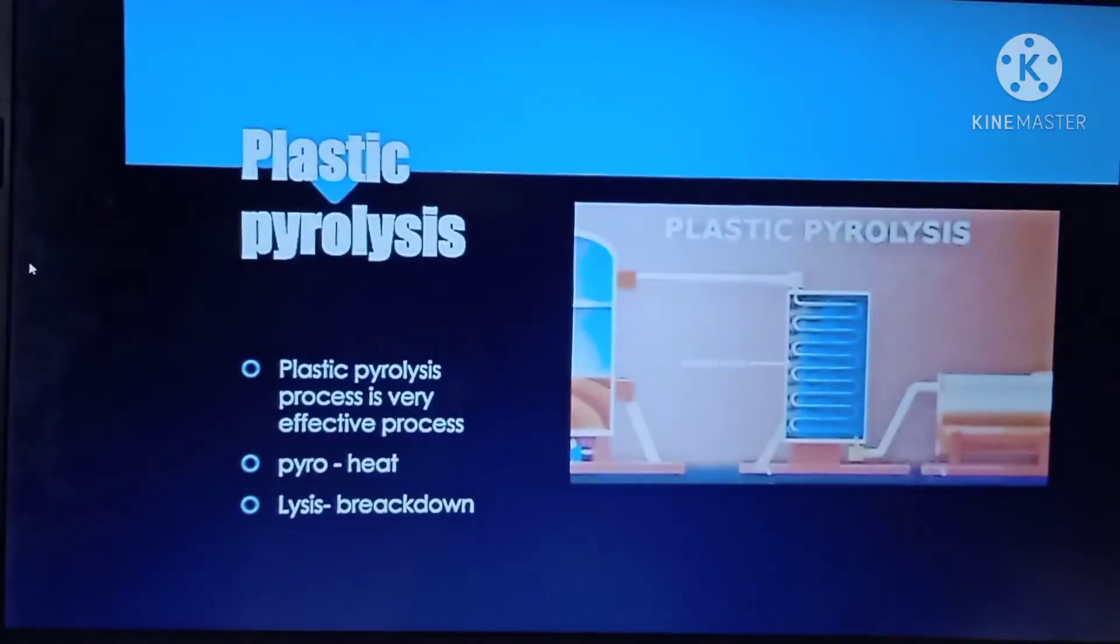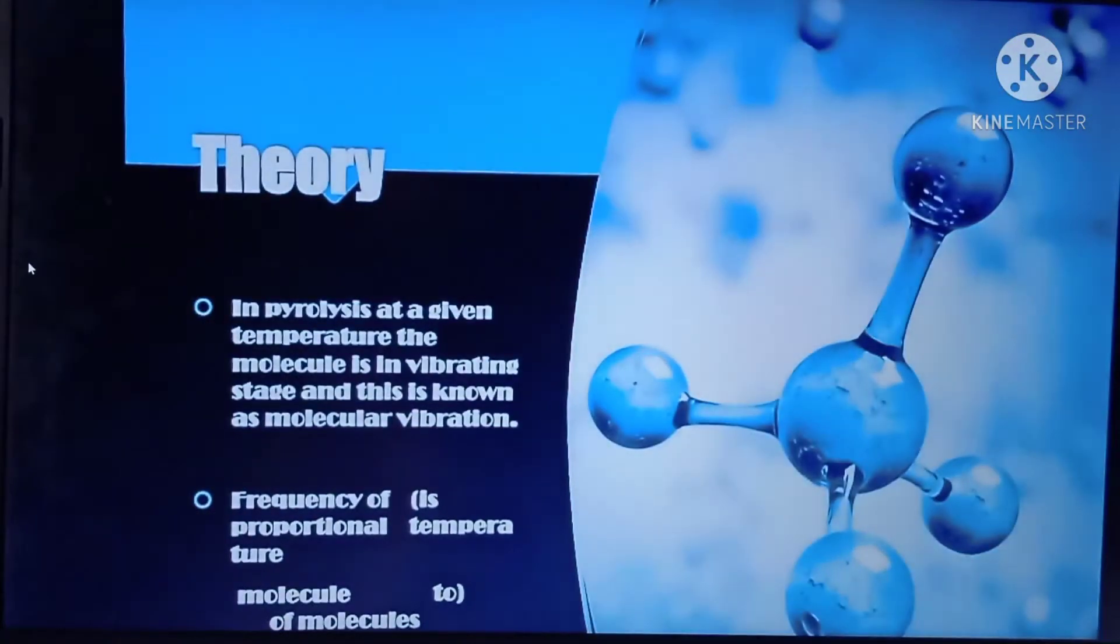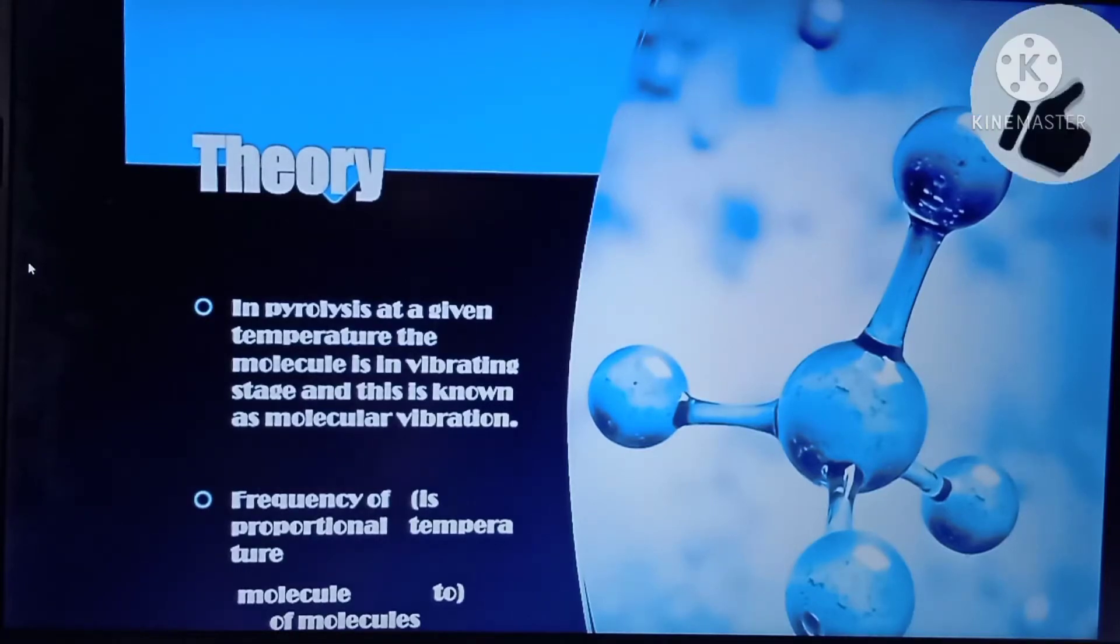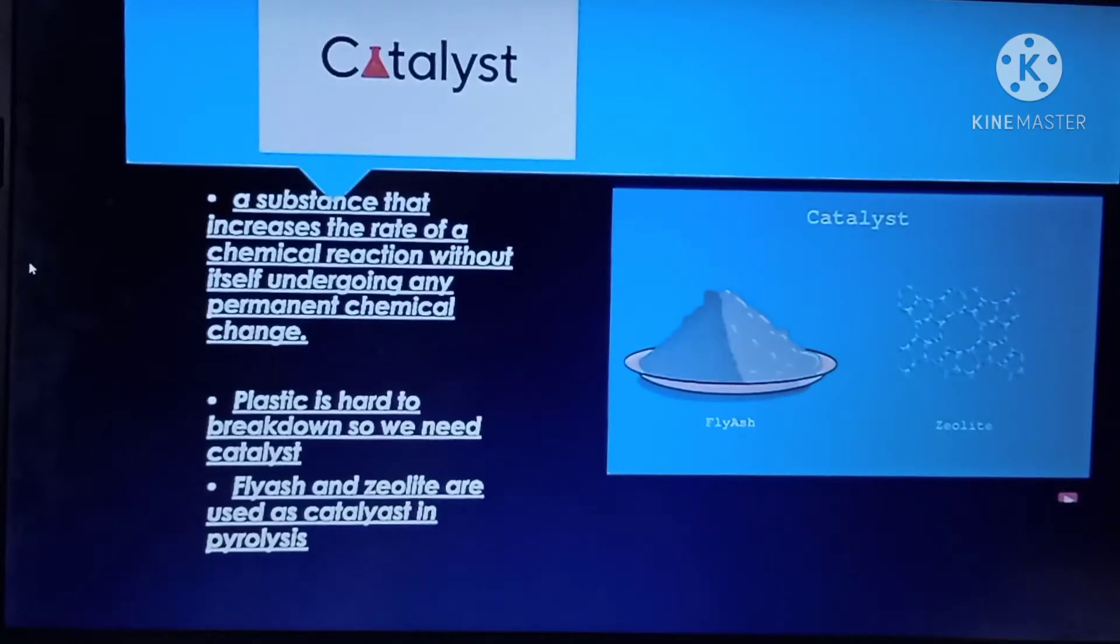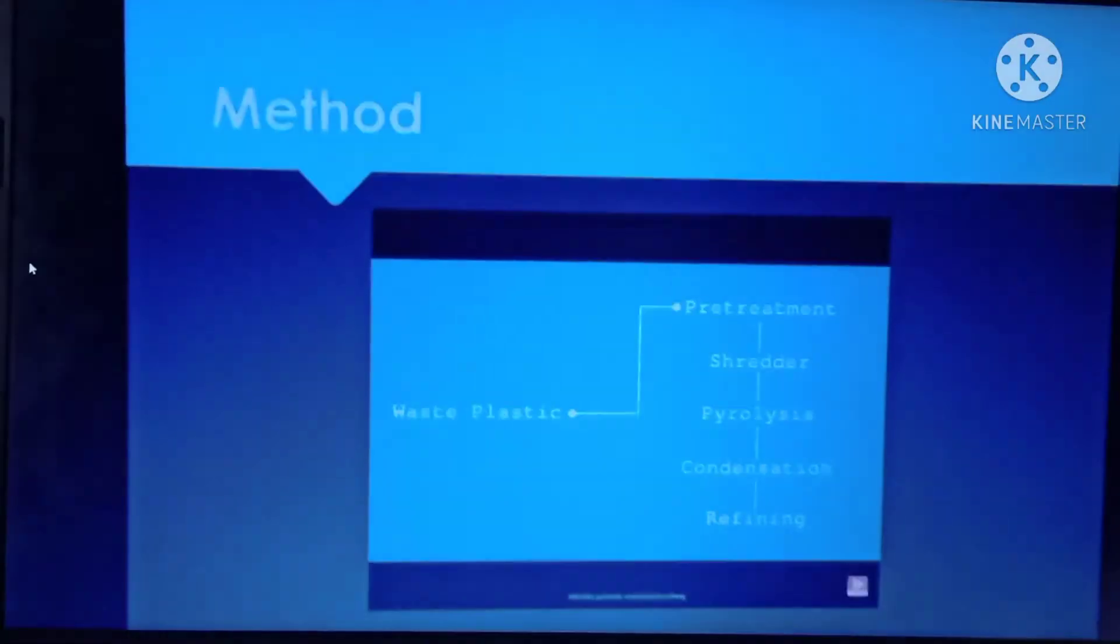Plastic pyrolysis process is very effective. Pyro means heat and lysis means breakdown. In pyrolysis at any given temperature, the molecule is in vibrating stage and this is known as molecular vibration. The frequency at which molecules vibrate is proportional to temperature. Plastic is very hard to break down so we have to add catalyst to it. Fly ash and zeolite are used as catalysts in pyrolysis method.